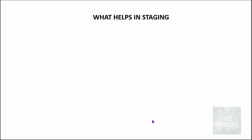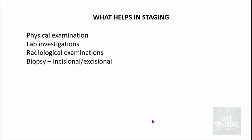How do clinicians actually stage neoplasms? Staging is based on various parameters: physical examination findings, laboratory investigations (routine blood or serum investigations), radiological examinations ranging from simple X-rays or ultrasound to CT scans or PET scans (positron emission tomography). Finally, biopsies — both incisional biopsy and excision biopsy where the whole tumor is excised — can also help in staging of tumors.